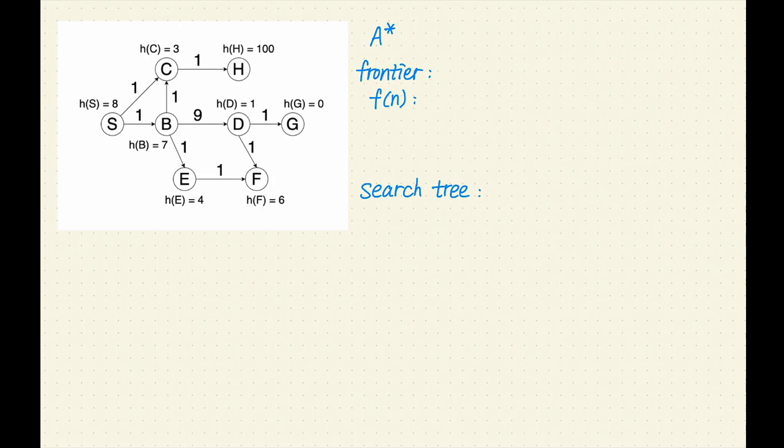Let's add the initial state S to the frontier and to the search tree. Next, remove S from the frontier. S is not a goal, so let's expand it. S has two successors, B and C. Let's add SB and SC to the frontier, with F values 8 and 4.